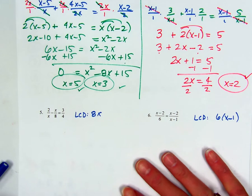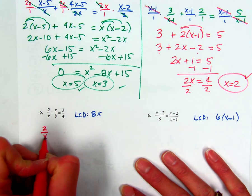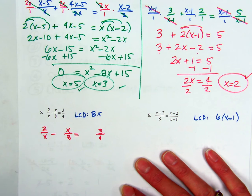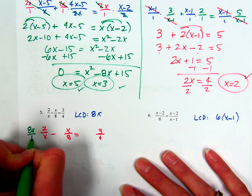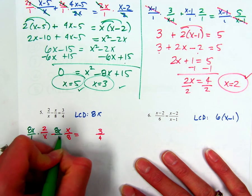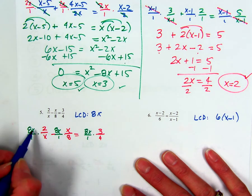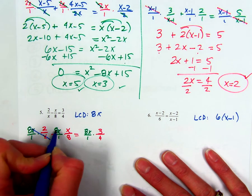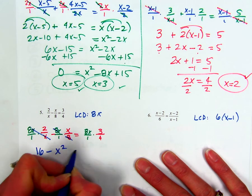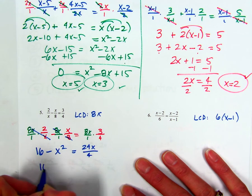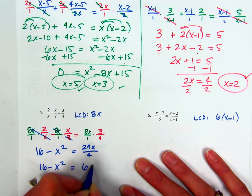All right, last two problems. My LCD is 8X, so I'm going to write down my problem with a little bit of space. My LCD is 8X over 1, so I'm going to cancel common terms. I get 16, 8's cancel, minus X squared. Nothing cancels, so I have 24X over 4, which a better way to write that is just 6X.